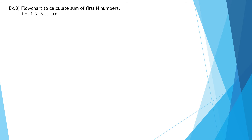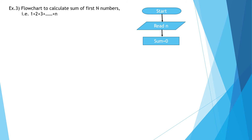The third example: draw a flowchart to calculate the sum of first n numbers — that is 1 + 2 + 3 + ... + n. We start with the terminal. Then we read the value of n. Next, we initialize sum to 0. We also initialize num to 1, since the first number is 1. Then we calculate sum = sum + num.